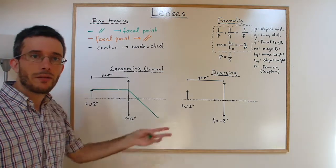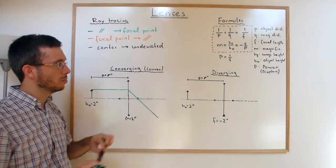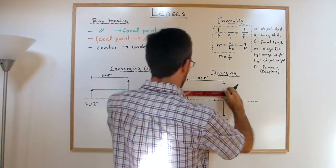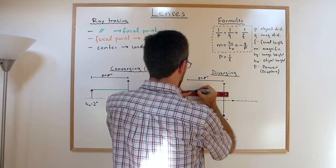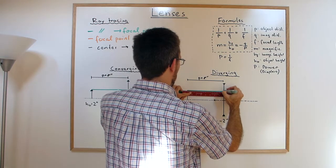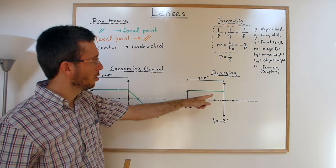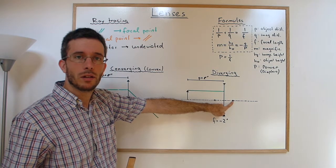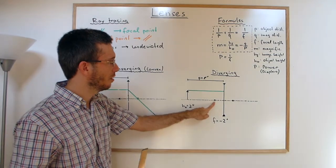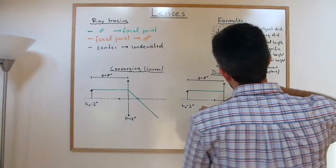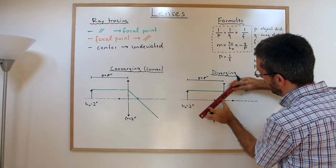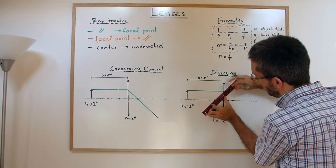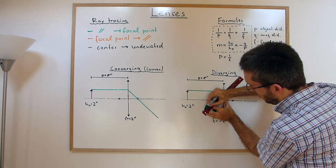For the diverging lens, it's quite similar. However, the parallel ray is not going through the focal point on the right, but through the one on the left. So it's just virtually going through the focal point. There's no real light on the left side. I'm drawing it dotted here.